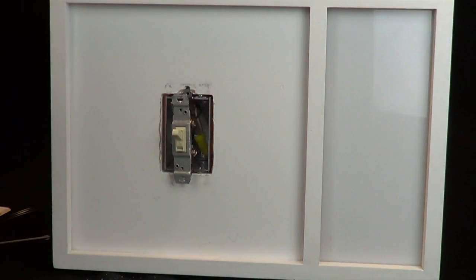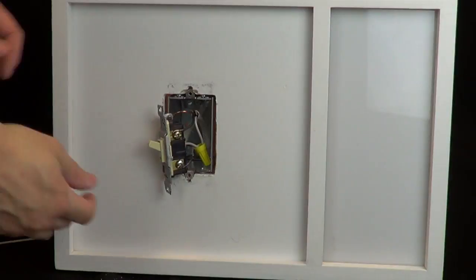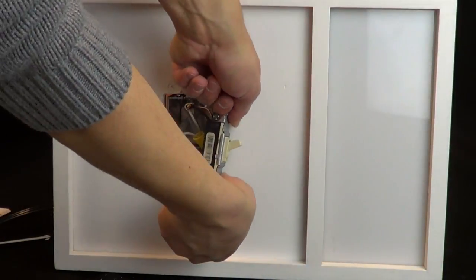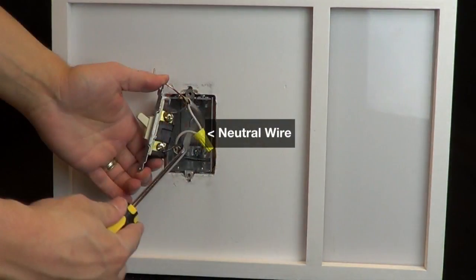On a standard single-pole switch, you should have two wires connected to the switch plus a ground wire. Make sure you have a neutral wire connection in the wall. Most newer homes have neutrals in each wall box, which are usually white wires in the back of the box.